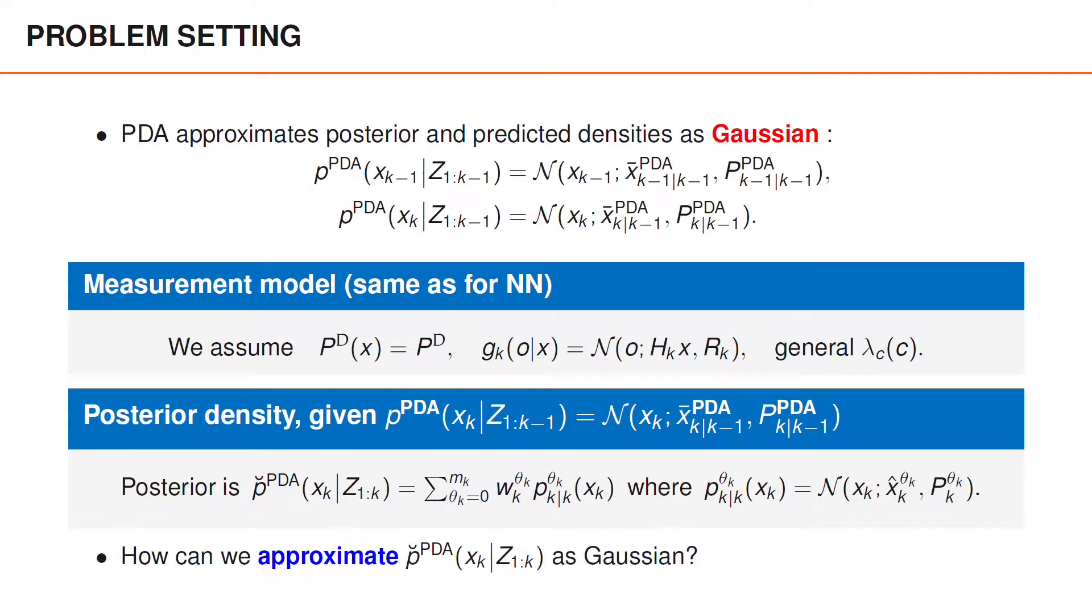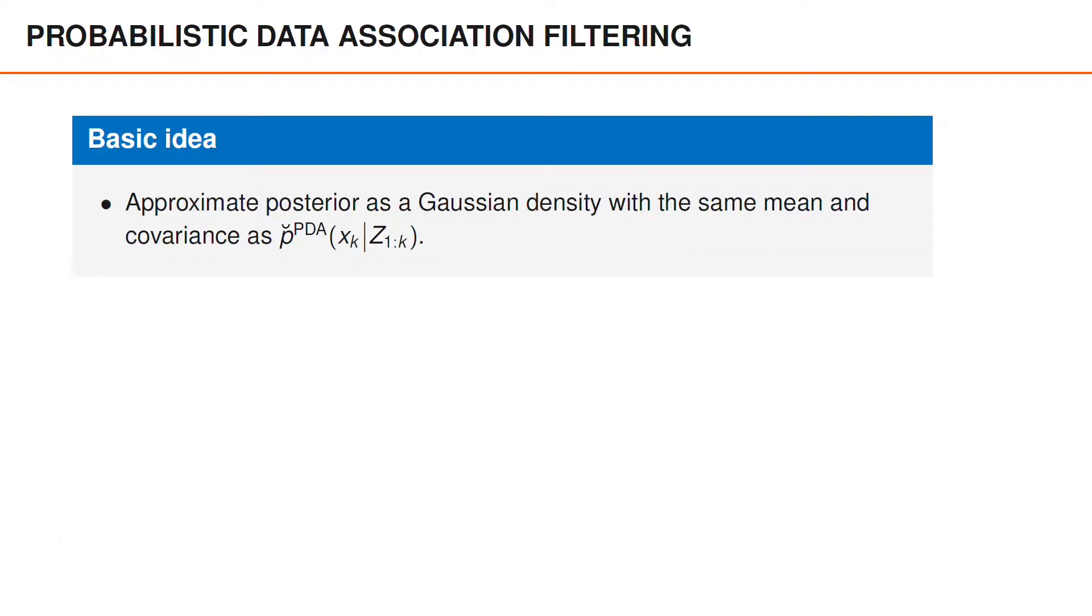Again, the question is how to approximate this Gaussian mixture as a Gaussian density. The basic idea in probabilistic data association is to use merging and approximate the posterior as a Gaussian density with the same mean and covariance as p-breve. That is, we replace the Gaussian mixture with a Gaussian density that has the same mean and covariance as the Gaussian mixture.